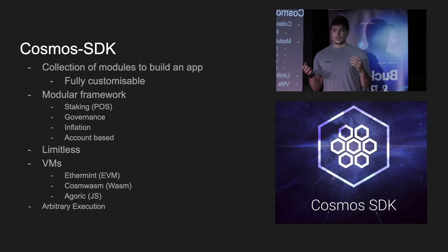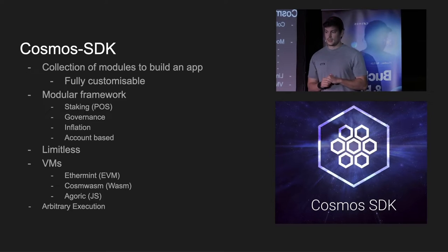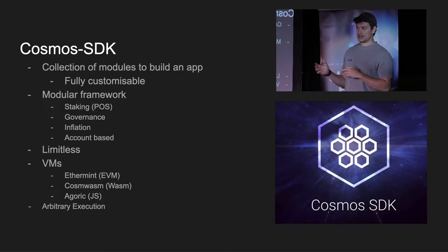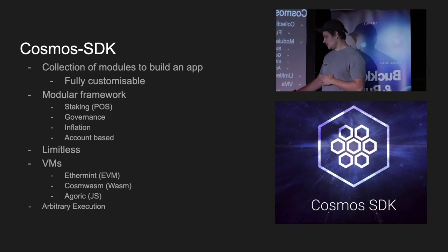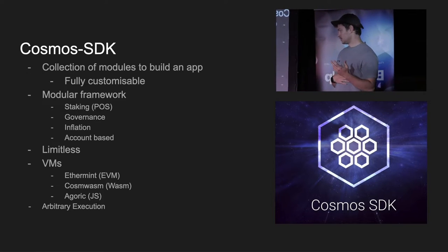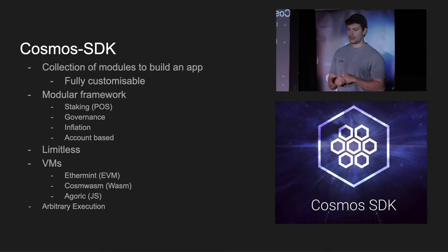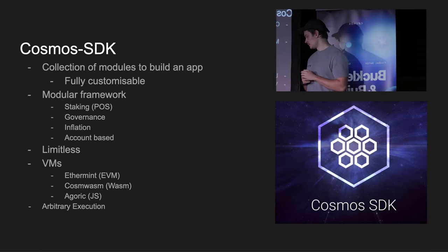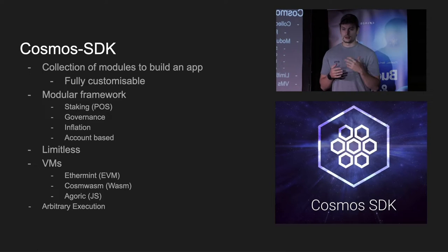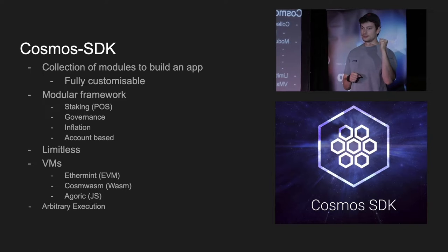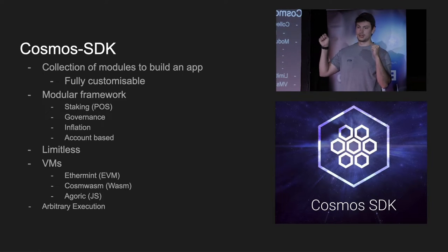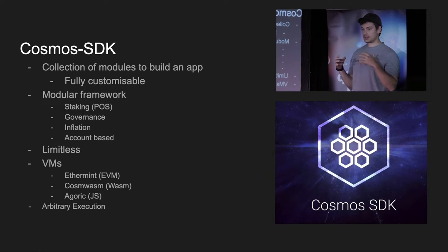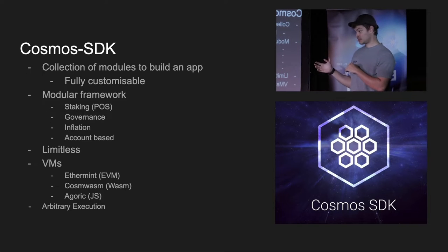What are the limits? It's kind of limitless — you can build whatever you want, and it's only getting easier. There's VM support, so if you don't like writing Go, you can write in Solidity, CosmWasm (which is Rust and TypeScript), or Agoric JavaScript. The limits aren't defined by Golang — you can write in your preferred language. Within the Cosmos SDK, you can build arbitrary execution into your app chain, enabling use cases not yet thought of in the Ethereum space.